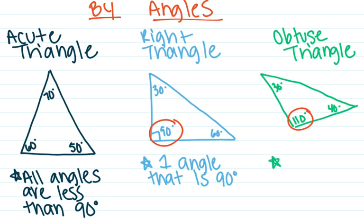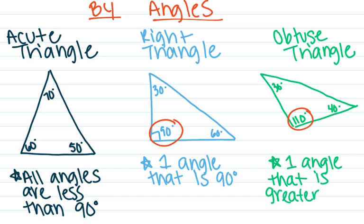That 110 degree angle is our one angle that is greater than 90 degrees — that makes it an obtuse angle. All it takes is one. You only need one obtuse angle in a triangle to have an obtuse triangle.